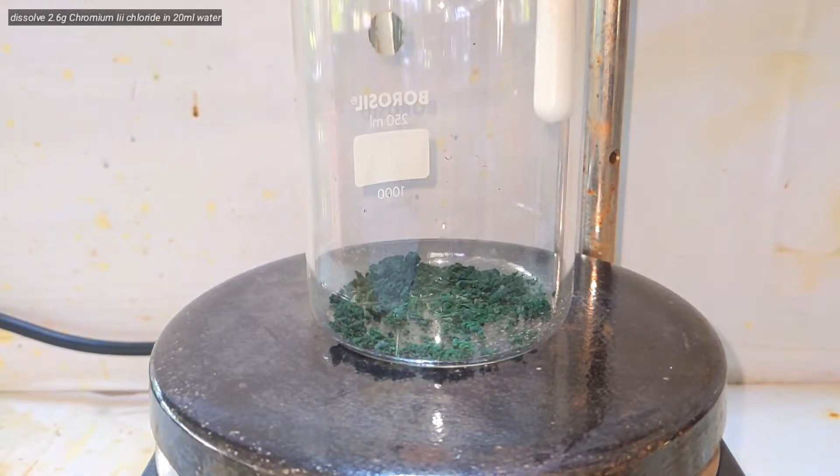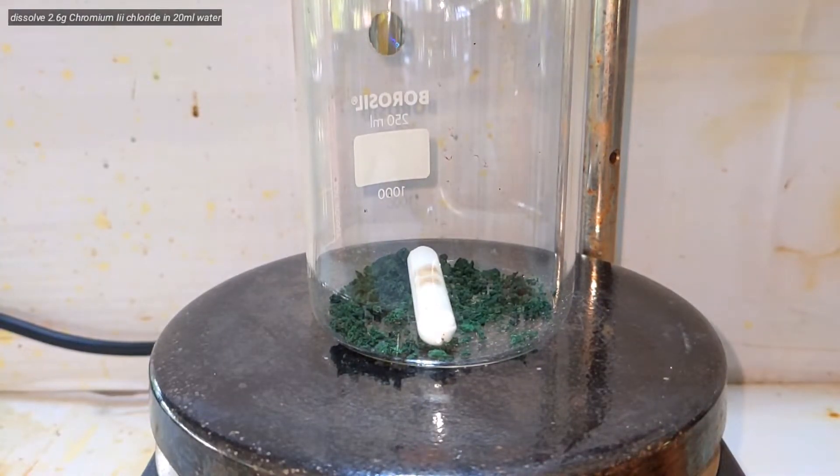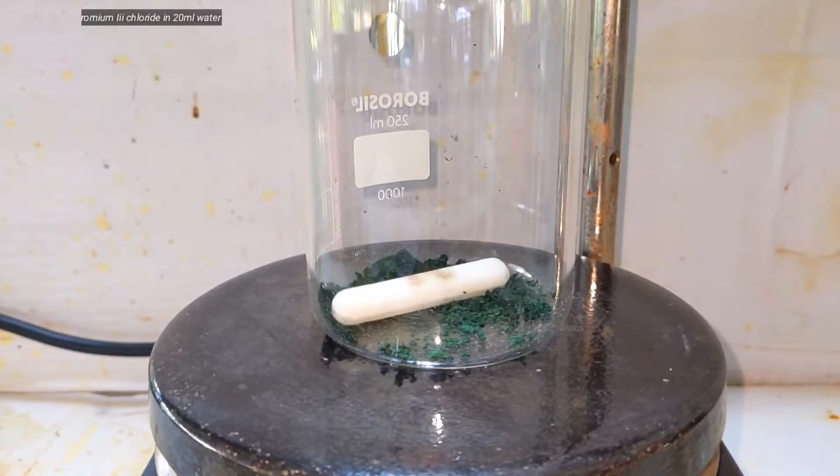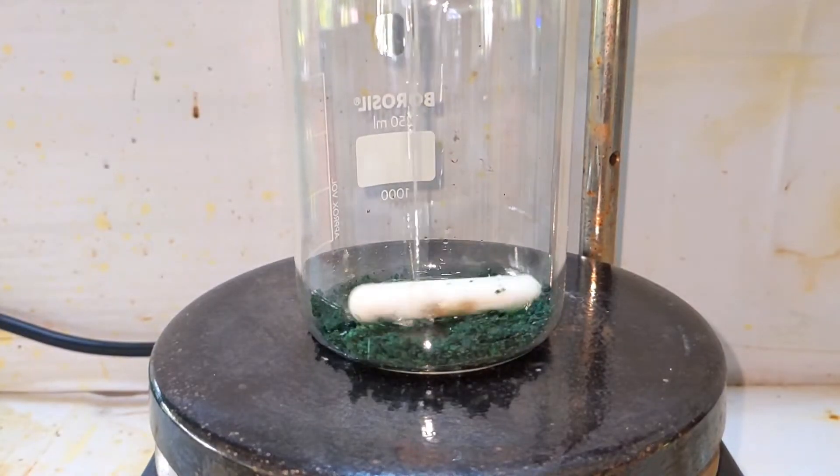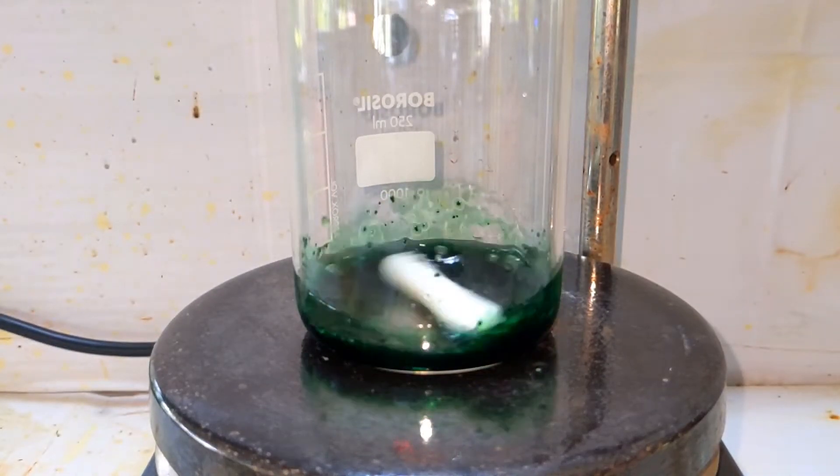Start by dissolving 2.6 grams of chromium chloride in 20 milliliters of distilled water. Chromium chloride has a nice green color to it.